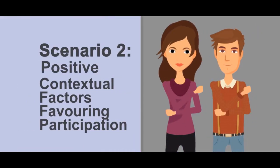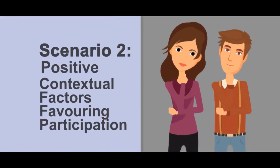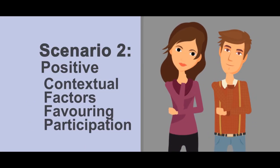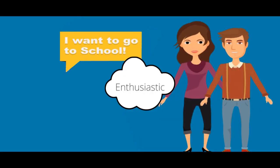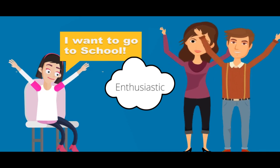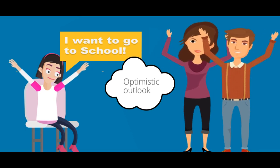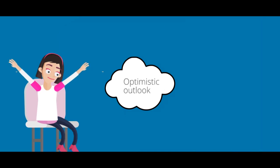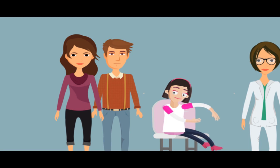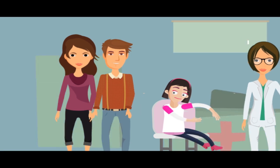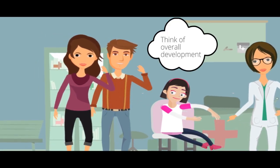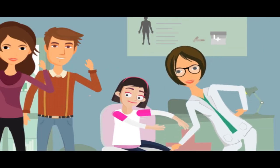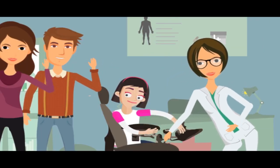Scenario 2: Positive Contextual Factors Favoring Participation. Sarah is an enthusiastic girl who wants to go to school. Her parents' optimistic outlook might encourage them to see a therapist to facilitate Sarah's desire to go to school. Sarah's therapist should think of Sarah's overall development and might give her a wheelchair to help her move around.